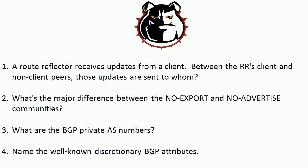Question two: what's the major difference between the no export and no advertise communities? Question three — it's a classic, right up there with the port number — we've got to know this one: what are the BGP private AS numbers? And then finally, number four: name the well-known discretionary BGP attributes.